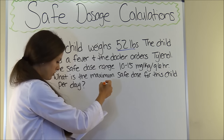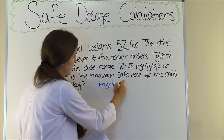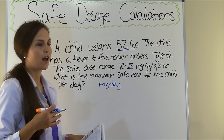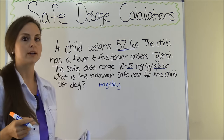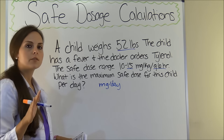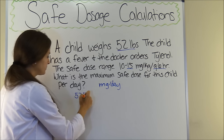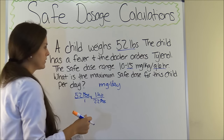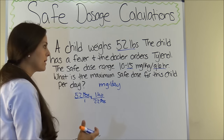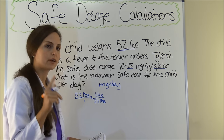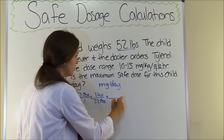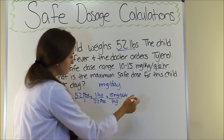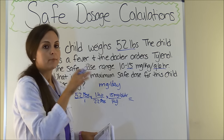Let's set up the problem using dimensional analysis. Our goal is milligrams per day. We're going to use 15 milligrams — the maximum — since we want the maximum dose, not the minimum. The 'every six hours' is very important because we need to figure out how much they can have per day. First, let's convert their weight: 52 pounds, with 2.2 pounds in 1 kilogram. Pounds cancels out, so we're in kilograms. Now let's plug in the safe dose: 1 kilogram equals 15 milligrams every six hours, per dose.